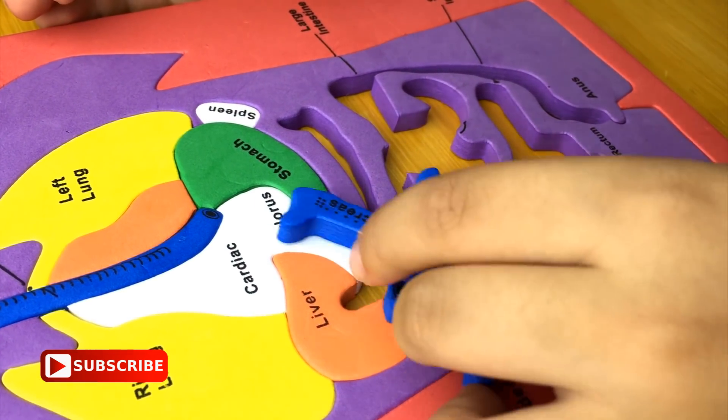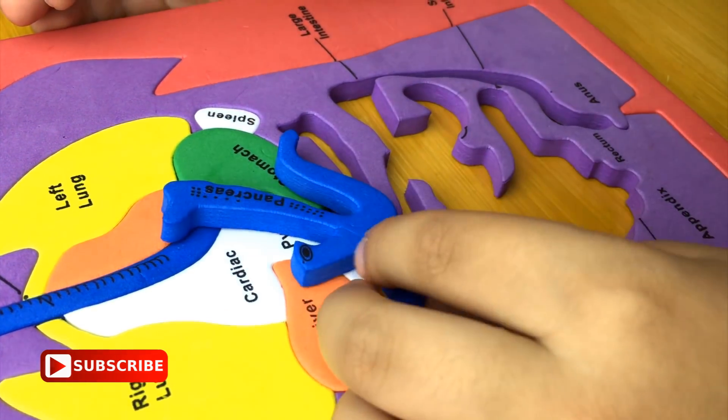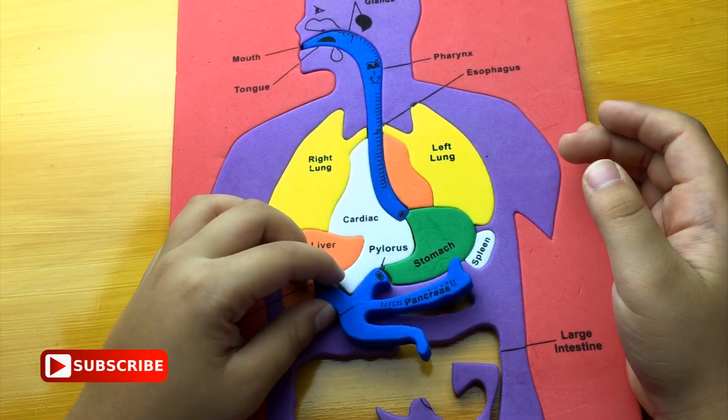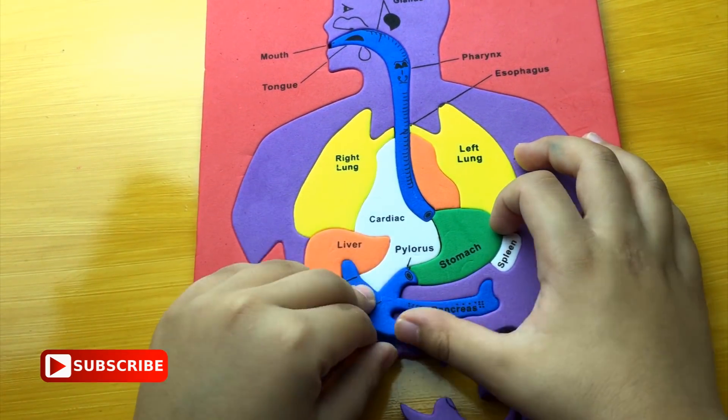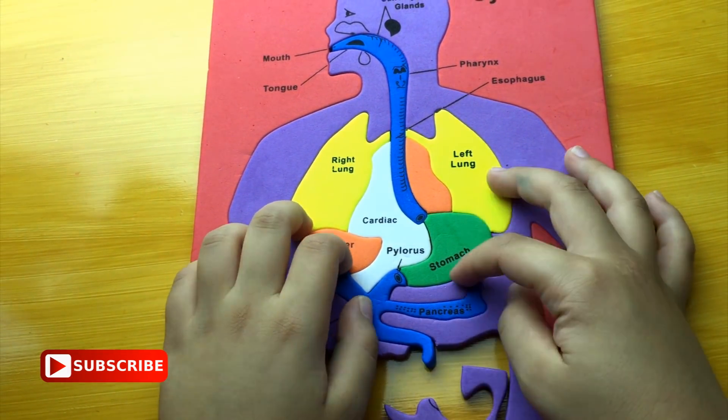This is pancreas. It's down and it's next to liver, cardiac, pylorus, and stomach.